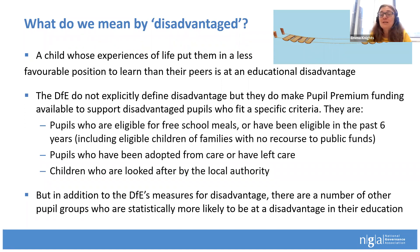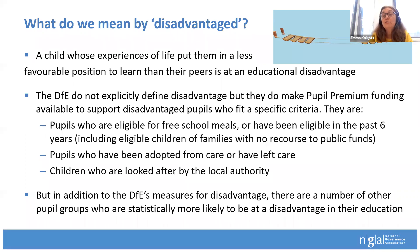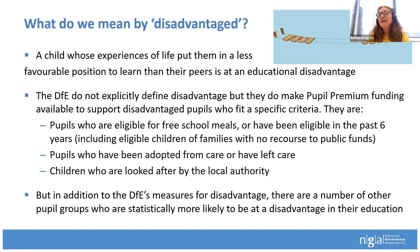The DfE, as I'm sure all of you on this call are aware, make the pupil premium available to support some disadvantaged pupils who fit very specific criteria. Those criteria are largely socioeconomic and financial — pupils who have been eligible for free school meals over a period of time, pupils who have been adopted from care or have left care, and children who are being looked after by the local authority. So very specific. But actually, the DfE in their governance handbook also talks about the role of governors and trustees in terms of broader disadvantage, which they don't define.